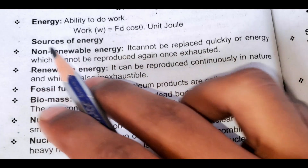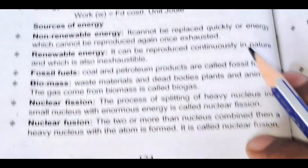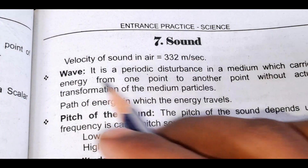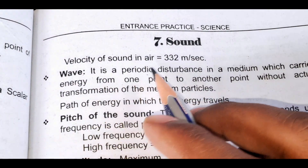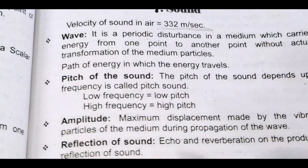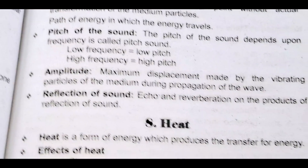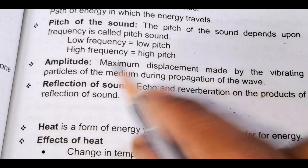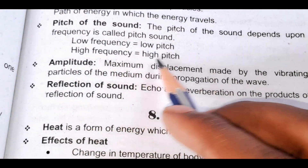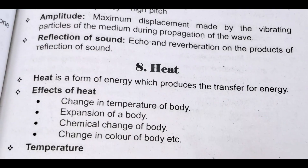Source of energy. The speed of sound in air is 332 meters per second. A wave, the pitch of sound: low frequency gives low pitch; high frequency gives high pitch. Amplitude. Reflection of sound.